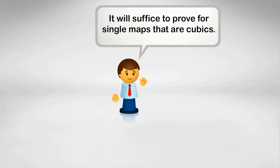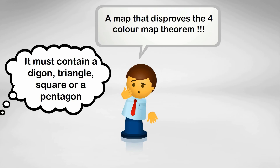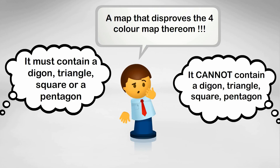Let's summarise where we've got to. We've said it's sufficient to look at single cubic maps. In the second part of the video, we looked at an unavoidable set: if there is a map that disproves the Four Colour Map Theorem, then it must contain either a diagon, a triangular country, a country bordering four others, or a country bordering five others. Now imagine that in the next section — reducible configurations — I could show that if there is a map that disproves the Four Colour Map Theorem, it cannot contain a diagon, triangle, square, or pentagon. Then we will have proved the Four Colour Map Theorem, because on the one hand it must contain one of those four types, and on the other hand it can't contain any of them.